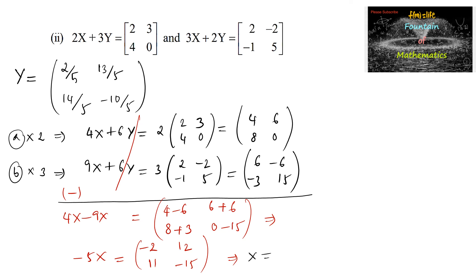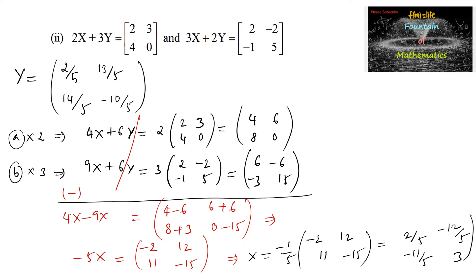So X equals −1/5 times [−2, 12; 11, −15], giving X = [2/5, −12/5; −11/5, 3]. Therefore matrix X is [2/5, −12/5; −11/5, 3] and matrix Y is [2/5, 13/5; 14/5, −2]. This is the answer. Thank you.